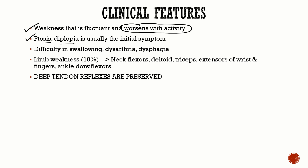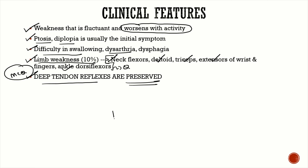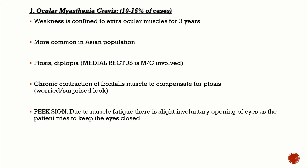Other symptoms of bulbar weakness include dysphagia and dysarthria. Limb weakness as the initial presentation occurs in about 10% of cases. Muscles preferentially involved are neck flexors, deltoid, triceps, extensors of the wrist and fingers, and ankle dorsiflexors. Very importantly, deep tendon reflexes are preserved in myasthenia gravis — in contrast to Lambert-Eaton syndrome where DTRs are absent or reduced.